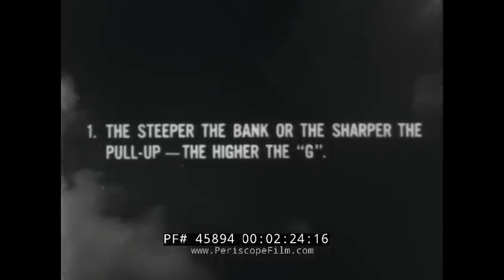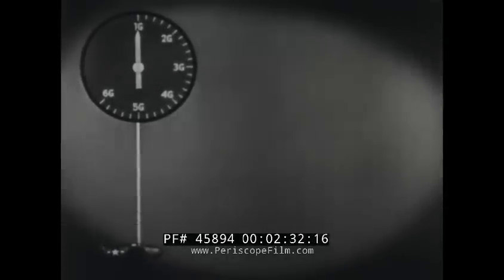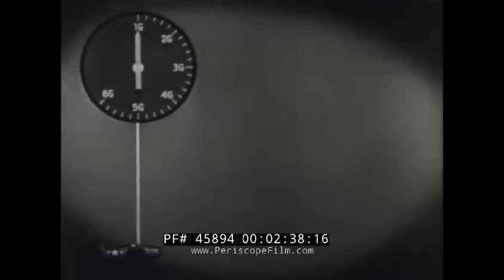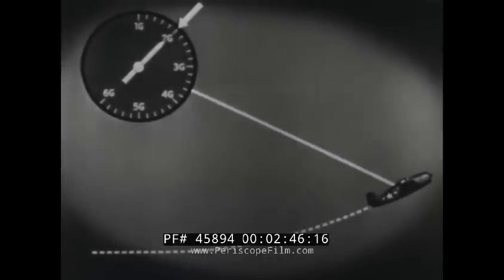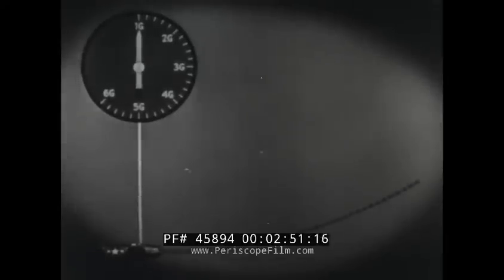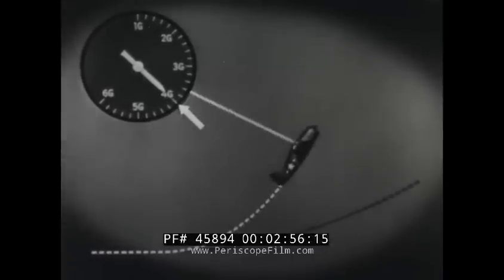The steeper the bank or the sharper the pull-up, the higher the G. One G is a force equal to the pull of gravity — the natural weight of anything when there is no other force applied. In a two-G turn or dive pull-out, you experience a centrifugal or accelerative force which causes you and your airplane to weigh just twice the normal weight. The higher the G and the heavier the load, the higher the stalling speed.